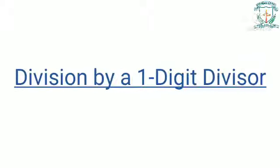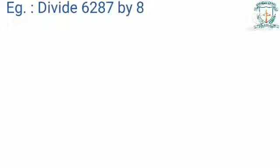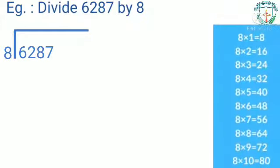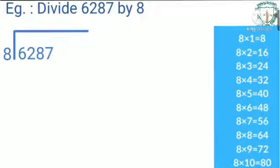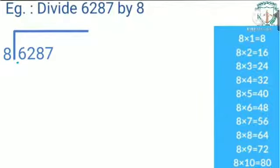Let us understand division by a one-digit divisor with an example: divide 6287 by 8. Here 6287 is the dividend and 8 is the divisor. Step 1: arrange the numbers as shown. Step 2: write the multiplication table of the divisor — here 8 is the divisor, so we write the multiplication table of 8. Step 3: divide the given number by 8. When we divide, we take the digits of the dividend from the extreme left.